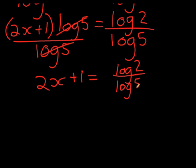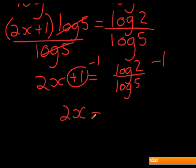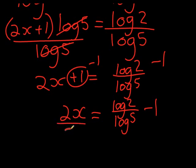So first I want to get rid of the plus 1, so I'm going to subtract 1 on both sides. And after that, I'm going to divide with a 2. So subtracting a 1 leaves me with log 2 over log 5 minus 1. And now I need to divide with a 2 on both sides.